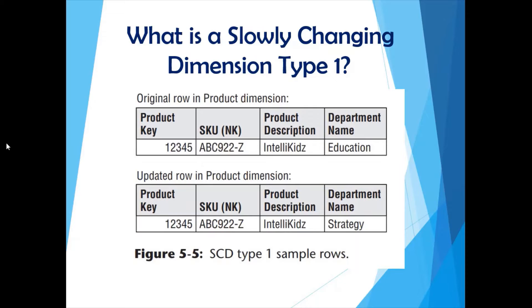Obviously, there is no history being maintained in type 1. You would not know what the previous department name was for this product description. This is how records are updated in a type 1 slowly changing dimension.